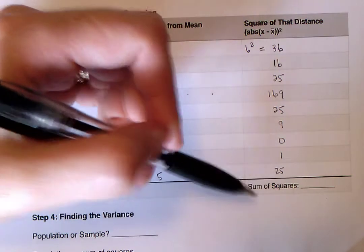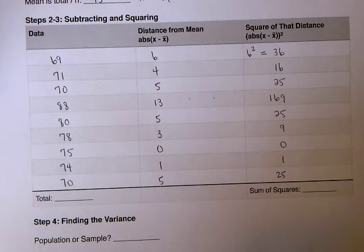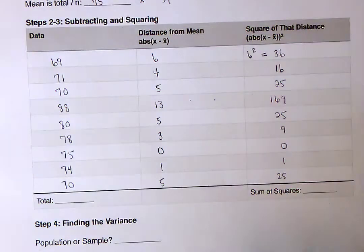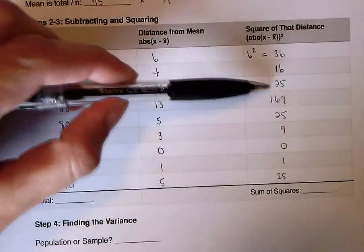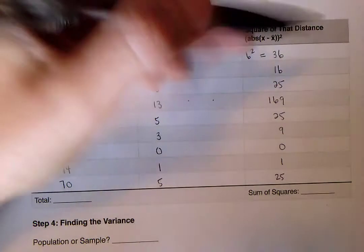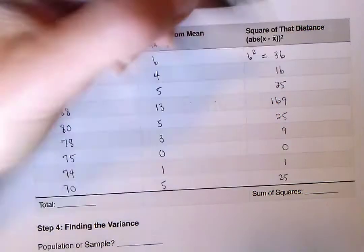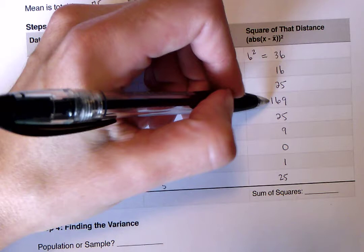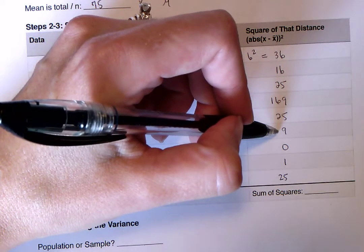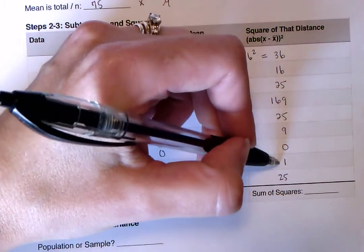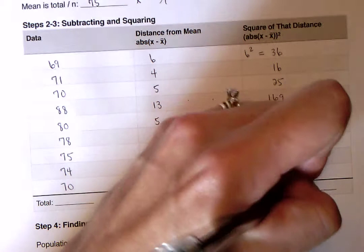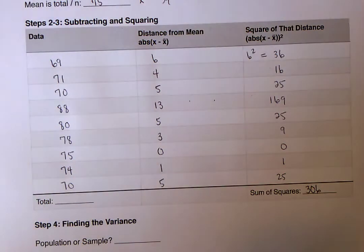Alright, so the sum of the squares, we can find that in just a second. We're going to want to do that for the next step, but I can go ahead and find that answer here. So if I want to add all of these up, I'm going to do that real quick. And I just added up 25, 25, and 25 to get 75. I added up 36, and 16, 169, and 9, and I get 306.